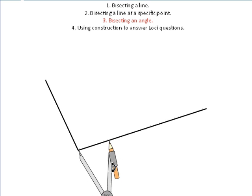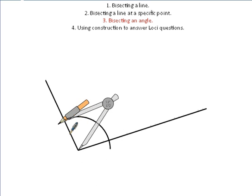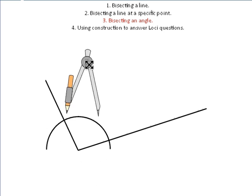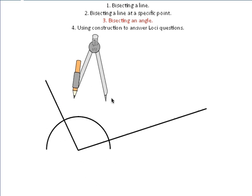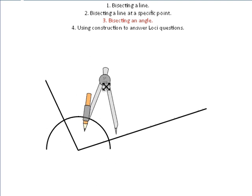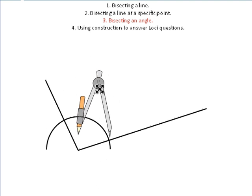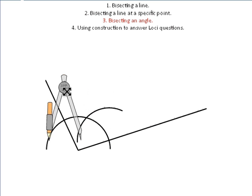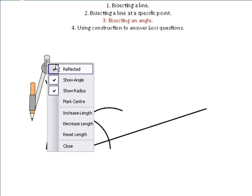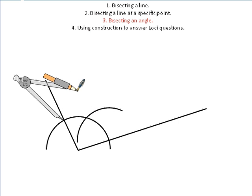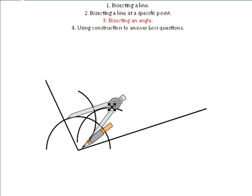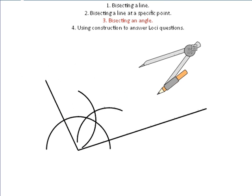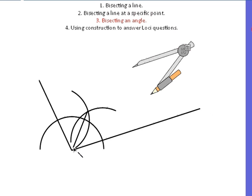Draw a nice arc all the way around. Now I'm not going to change the size of the distance between the pen and the needle — really important. Put the needle where we've created an intersection and draw a nice smooth arc. Then over to the other side, set your compass up correctly, and draw another nice smooth arc. Then join it up with your pencil and ruler, making sure that's done accurately.